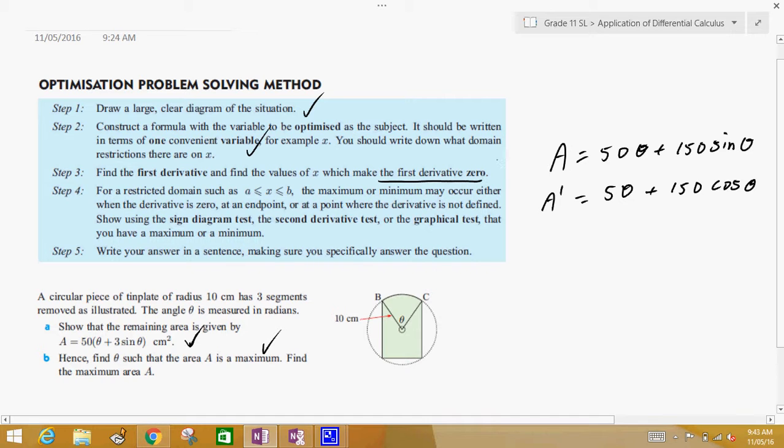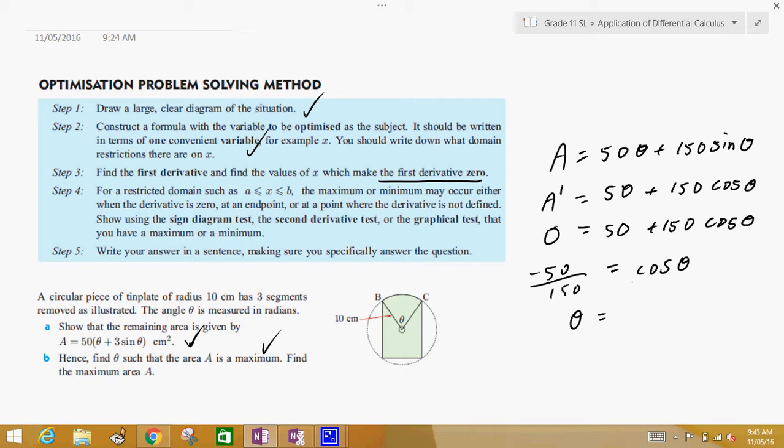Now, we're going to have to make the derivative equal to 0 and then solve for theta. We got 50 plus 150 cosine theta. And that's fine for theta. Bring it over. Negative 50 divided by 150 is equal to cosine theta. And if we get out our calculator and do second function cosine of negative one-third, you get the answer of 1.91. So, theta is equal to 1.91. Remember, this is in radians. Make sure your calculator is in radians.